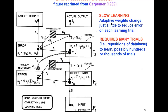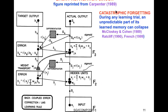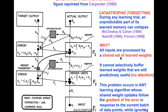Backpropagation learns through slow learning, meaning adaptive weights change just a little to reduce error on each learning trial. That requires many repetitions of the whole database to learn — possibly hundreds or thousands of trials. This contrasts with fast learning, where adaptive weights zero error signals on each trial, just as we can learn a face we see just once and remember it for a long time. If backprop tried to use fast learning, it would become wildly unstable. Catastrophic forgetting also occurs in backprop, so that during any learning trial, an unpredictable part of its learned memory can unexpectedly collapse. So deep learning is thus neither reliable nor trustworthy.